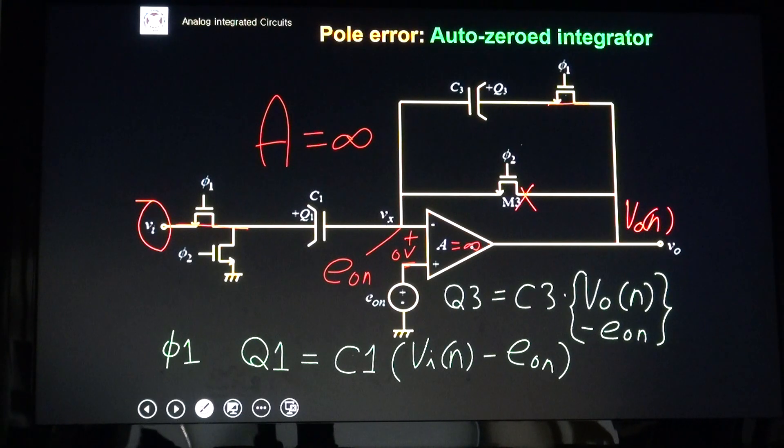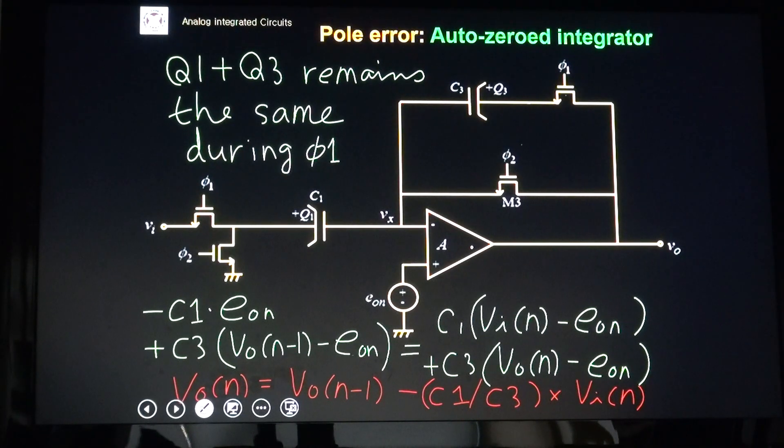During φ1 phase, the op-amp summing node is disconnected from outside world. So, the total sum at the Vx node must remain the same. So, Q1 plus Q3 remains the same during the φ1 phase. Q1 plus Q2 at the start of φ1 is equal to Q1 plus Q3 at the end of φ1. At the start of φ1, the charge must be same as at the end of proceeding φ2. This term is Q1 plus Q3 at the end of proceeding φ2. This term is Q1 plus Q3 at the end of φ1.